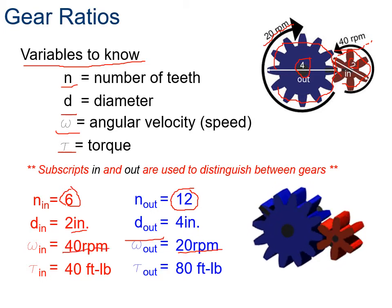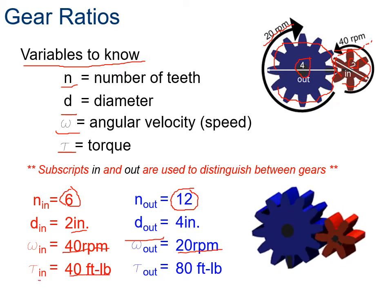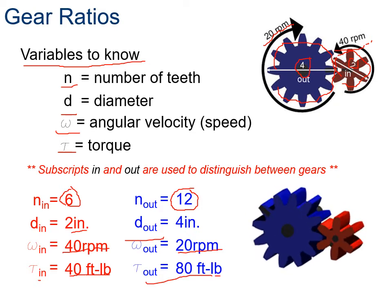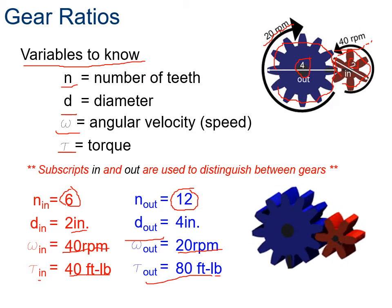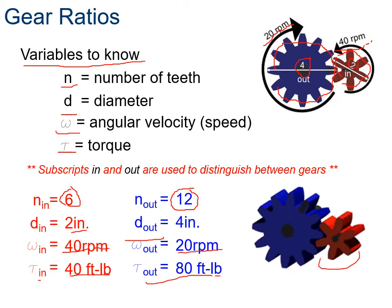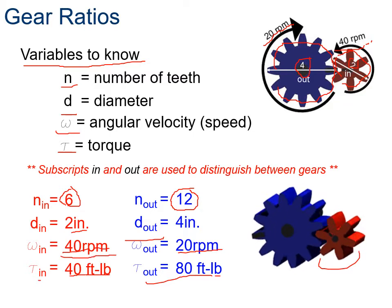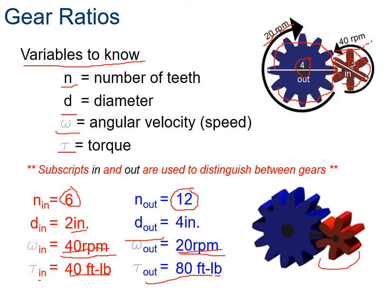Torque is measured in foot-pounds. The torque in from the red gear is 40 foot-pounds and the torque out from the blue gear is 80 foot-pounds. The driver gear is the input - the red one is driving the blue one. The red one is going fast at 40 RPMs and the blue one is going slower at 20 RPMs because as it slows down, torque increases.